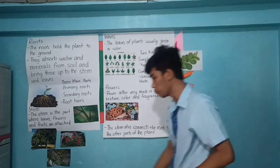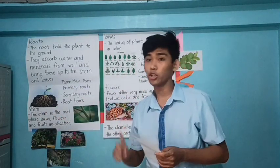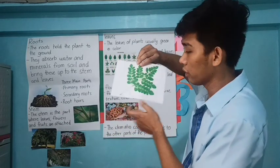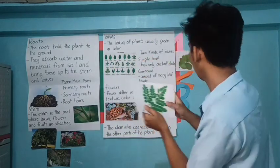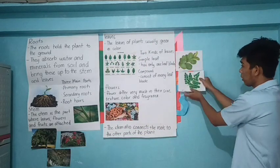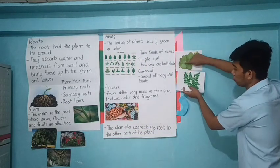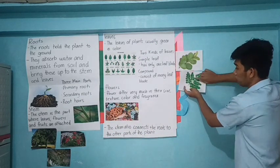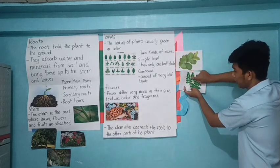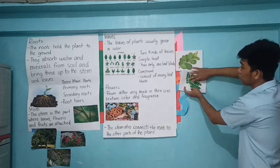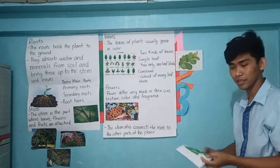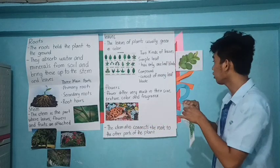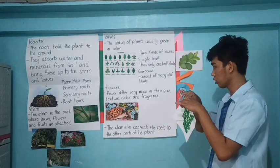A compound leaf consists of many leaf blades. One prime example is malunggay. If you analyze it, the guyabano leaf has only one leaf blade, but the malunggay has multiple leaf blades on a single stalk. That is the main difference between them. That is the example of compound leaves.